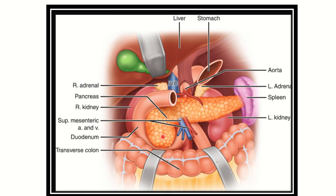Blood vessels such as the abdominal aorta are also closely related to the left adrenal gland. Again, we can see the stomach is related here, then the crus of the diaphragm, and then the kidney, which is also very close. The pancreas is also very closely related to the left adrenal gland.